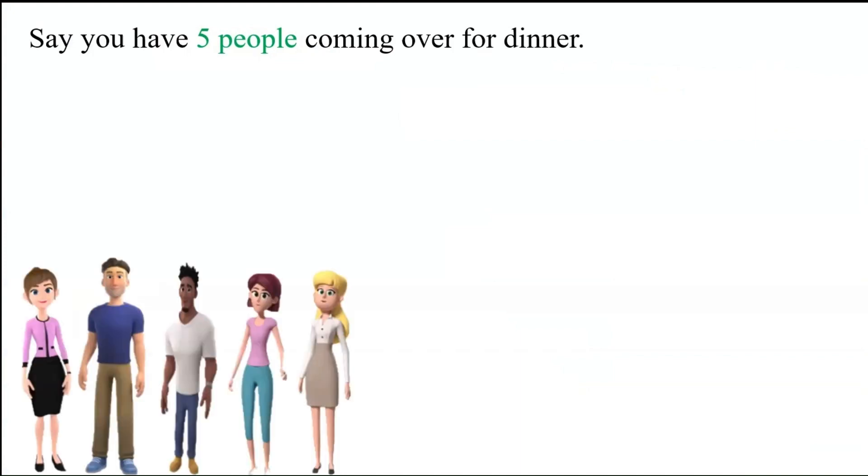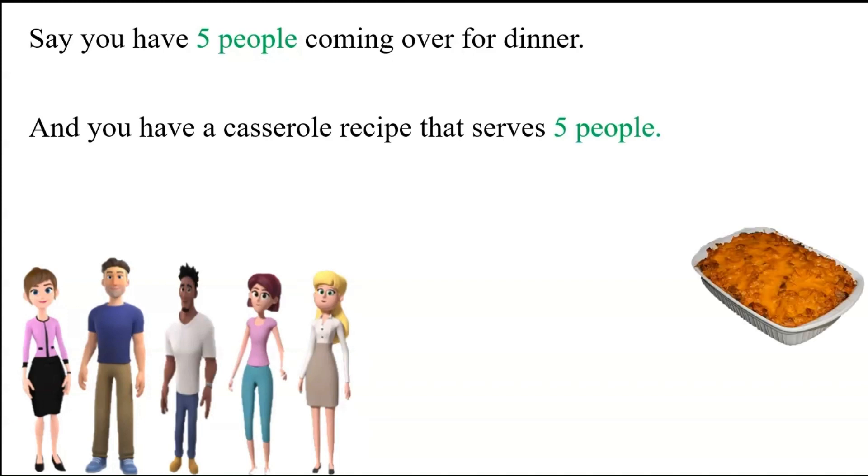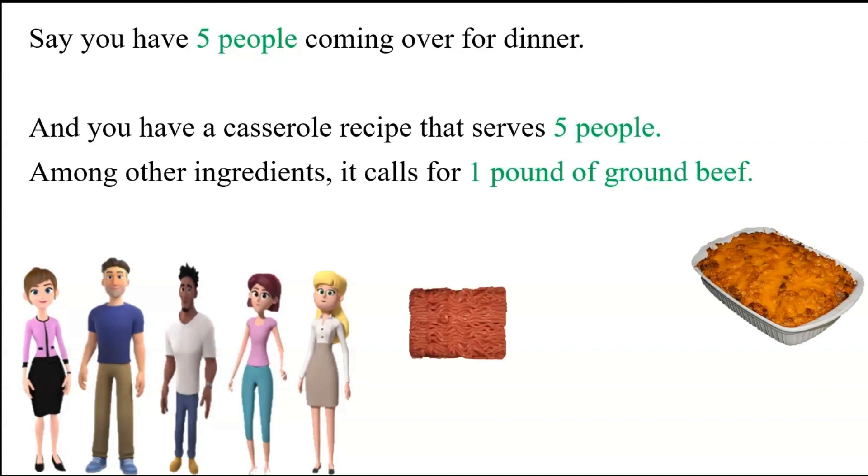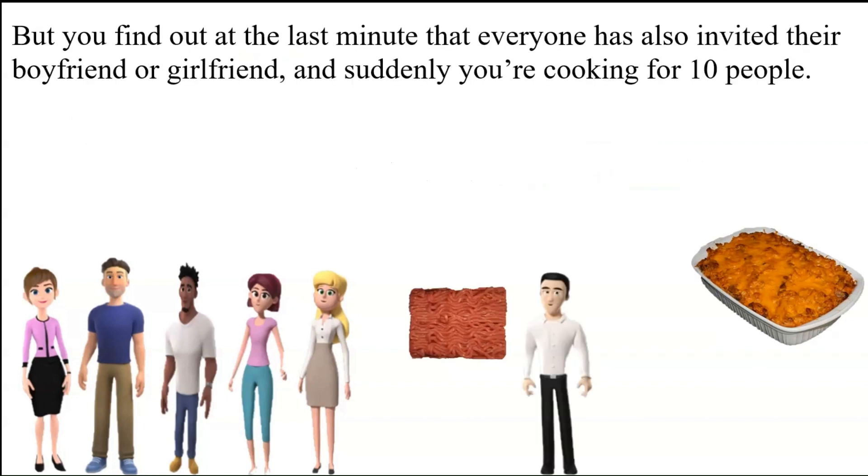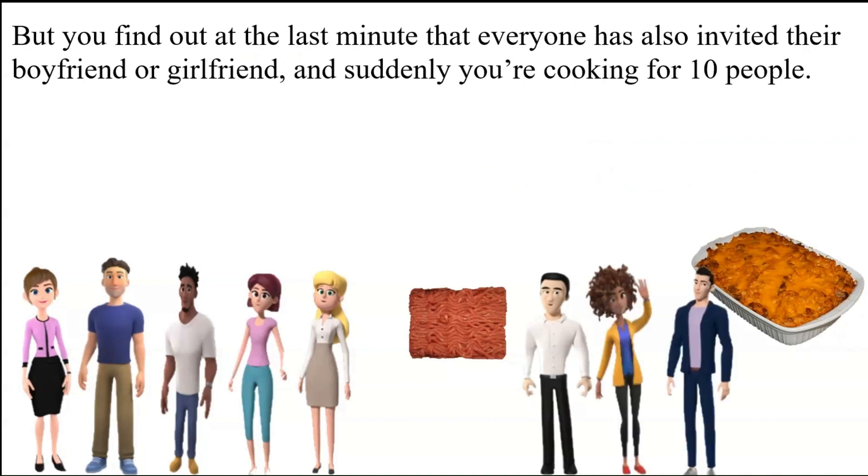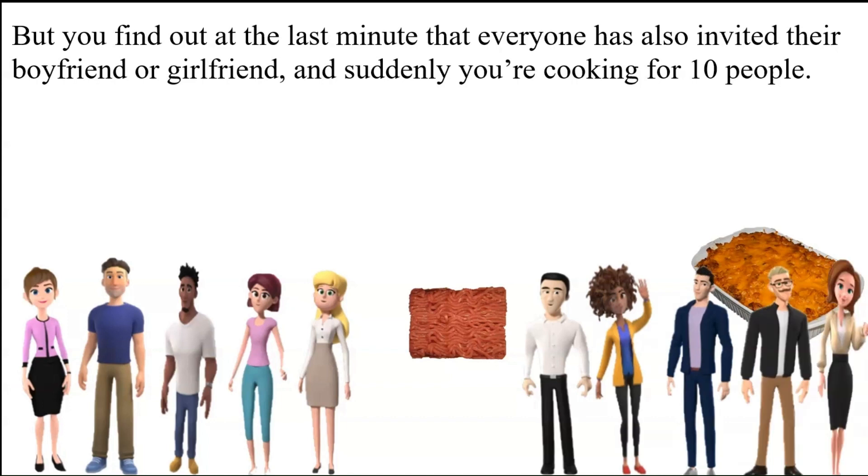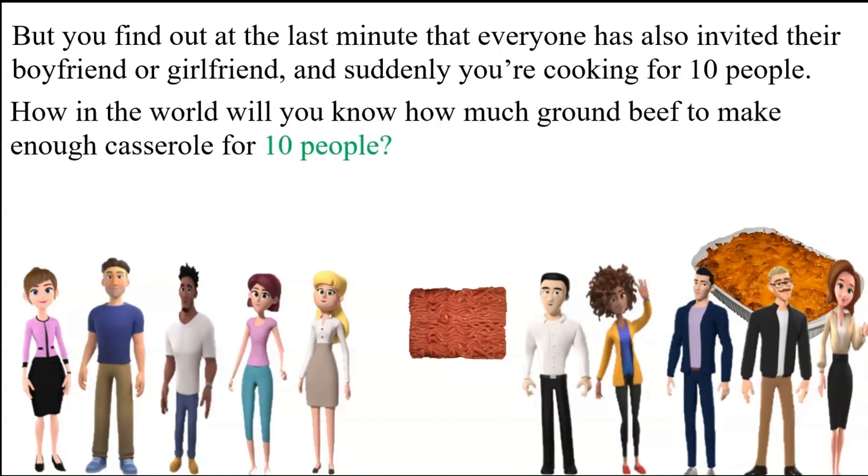So suppose you have five people coming over for dinner, and you know they're going to show up, and you've got this casserole recipe that serves five people. Among other stuff that goes in it, it calls for one pound of ground beef, but then later you find out at the last minute that everybody has also invited their boyfriend or girlfriend, and suddenly you're cooking for ten people. So the big dilemma is, how in the world will you know how much ground beef to make casserole for ten people?